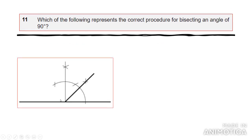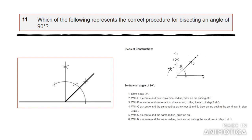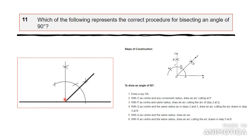The third option is also wrong because you need a different point to draw the 90-degree line. The correct answer is the last option. First you construct the 90-degree line, and then you bisect that 90-degree angle. This is the 90-degree line and this is the bisected angle.